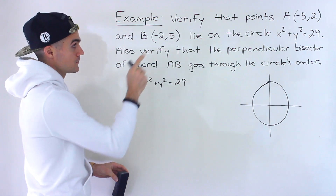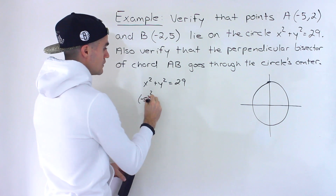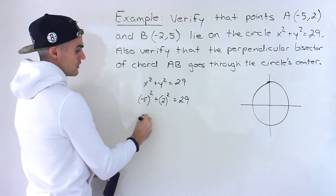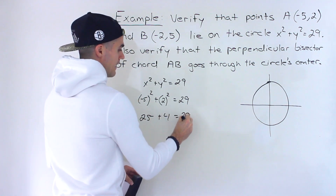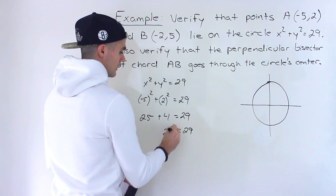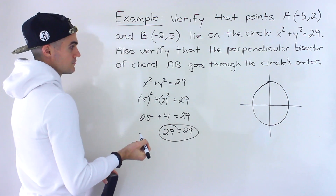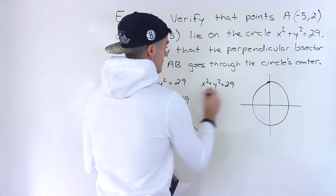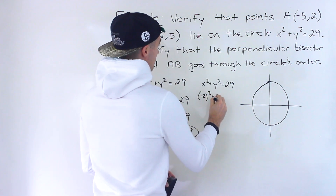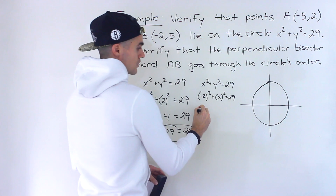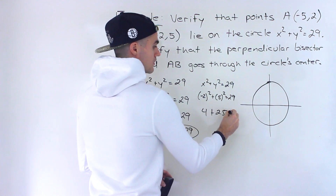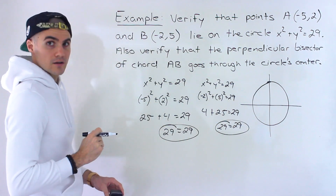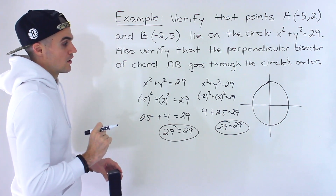Plugging in negative 5 and 2 for x and y respectively, we get 25 plus 4, and the left side equals the right side. Then for negative 2 and 5: negative 2 squared plus 5 squared gives us 4 plus 25, and again the left side equals the right side. That's how we verify that certain points are on a circle.